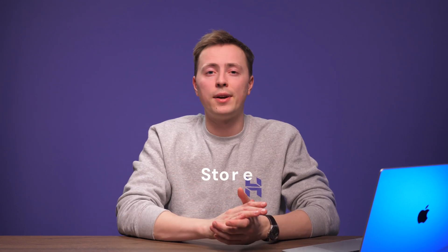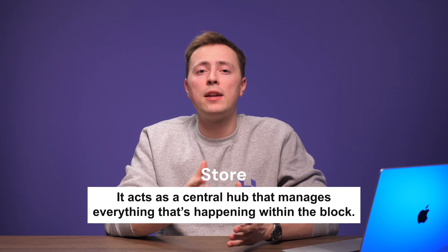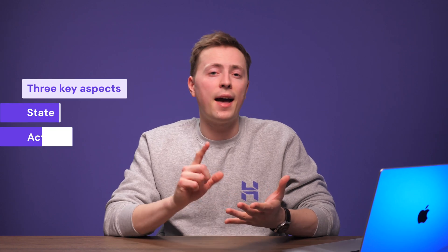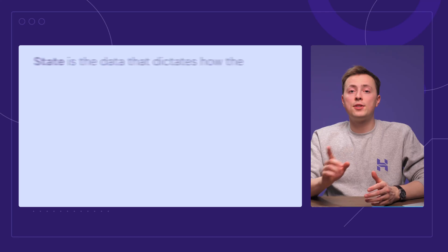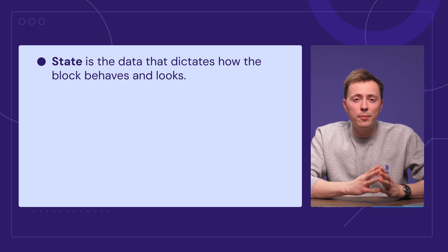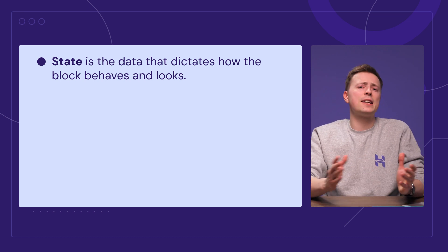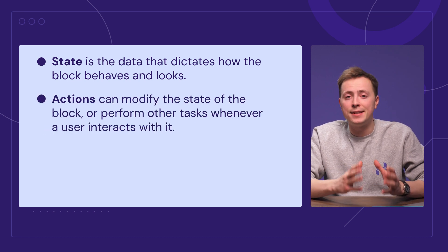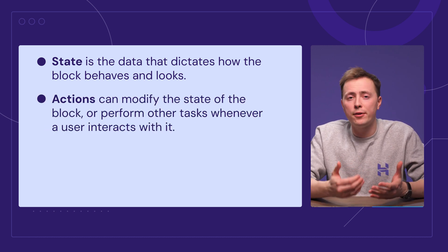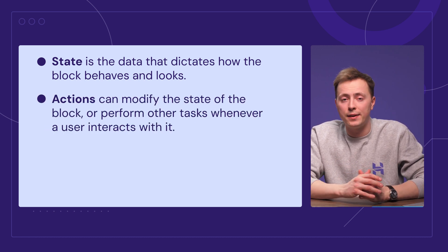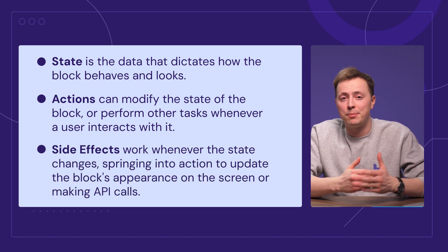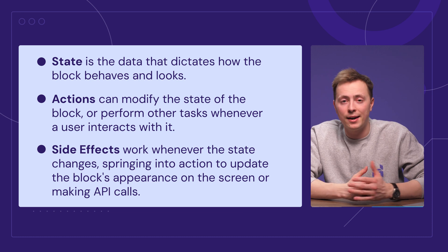The second component is Store. It acts as a central hub that manages everything happening within the block, working like a control center tracking three key aspects: State, Actions, and Side Effects. State is the data that dictates how the block behaves and looks — think of it as the block's brain. Actions can modify the state or perform other tasks whenever a user interacts with the block. Side effects trigger whenever the state changes, updating the block's appearance on screen or making API calls.